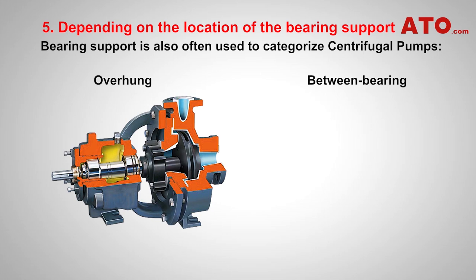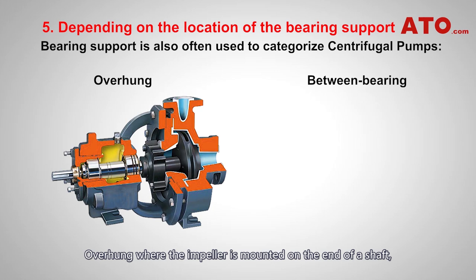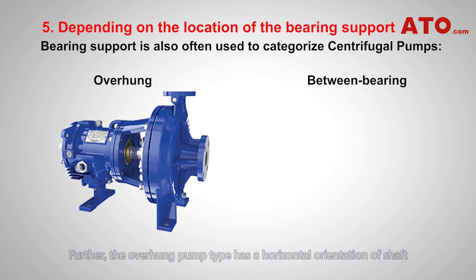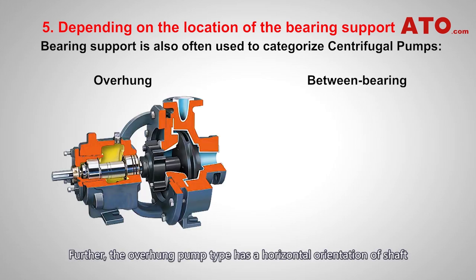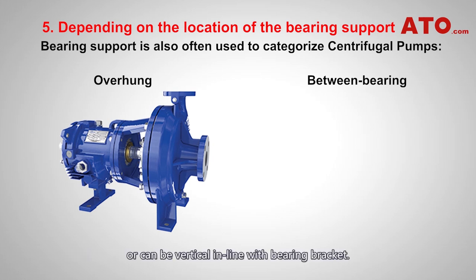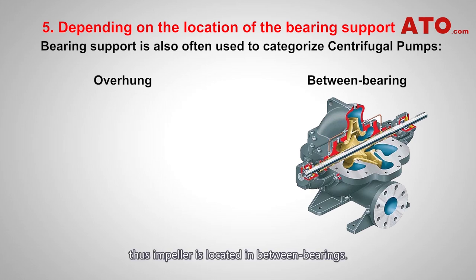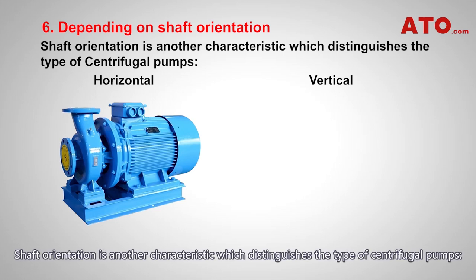Bearing support is also often used to categorize centrifugal pumps. Overhung: where the impeller is mounted on the end of a shaft supported by bearings on only one side. The overhung pump type can have a horizontal orientation of the shaft or can be vertical in-line with a bearing bracket. Between bearing: where the impeller is mounted on a shaft that has bearing support on both ends, so the impeller is located in between the bearings. Shaft orientation is another characteristic which distinguishes the type of centrifugal pumps.